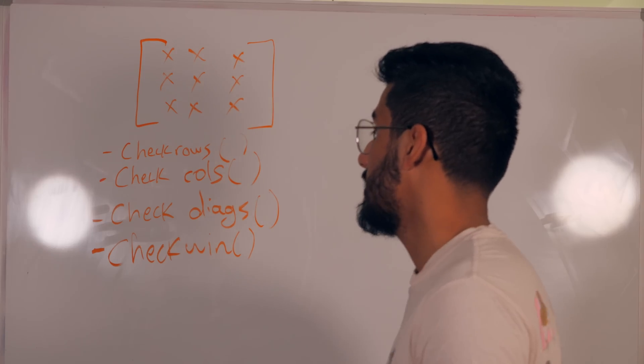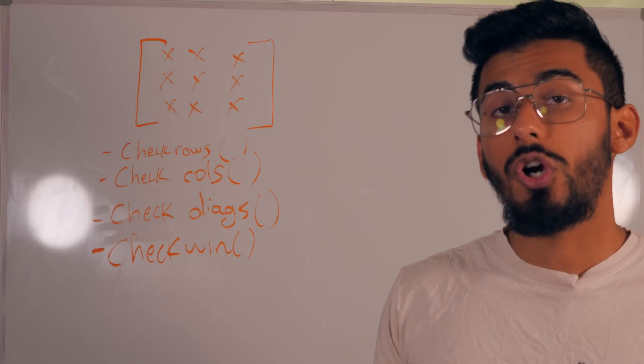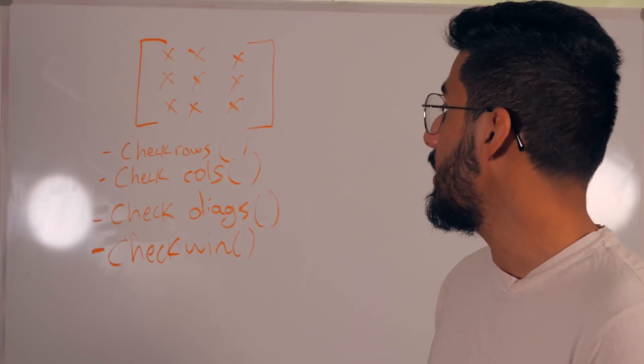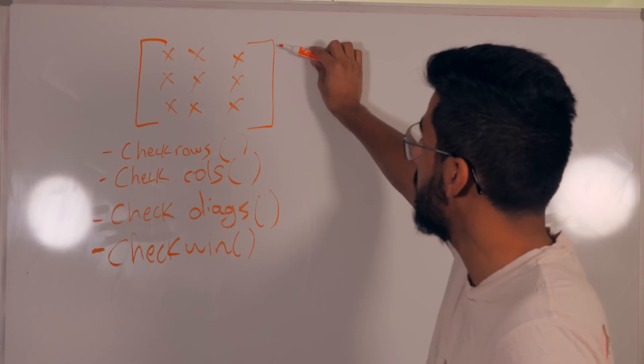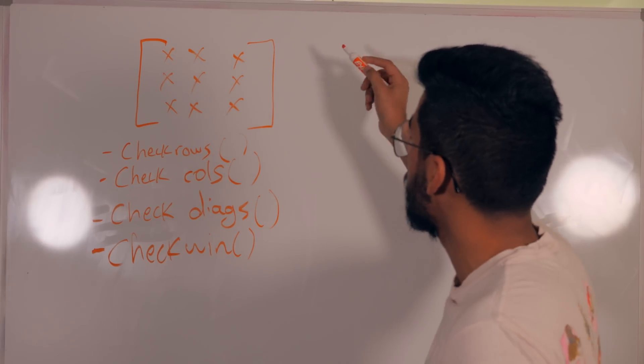And then I can have functions that can determine a loss. We can have a function that can detect whose turn it is, or whether it's nobody's turn.